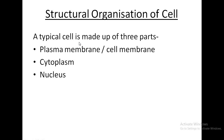A typical cell is made up of three parts. First, plasma membrane, which is also called a cell membrane. Second, cytoplasm. And third, the nucleus.